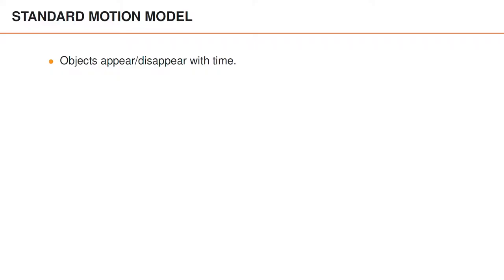In difference to the measurement model, the motion model has definitely changed compared to earlier parts of this course, since objects can enter and leave the area of interest over time. The number of objects is therefore generally time varying.